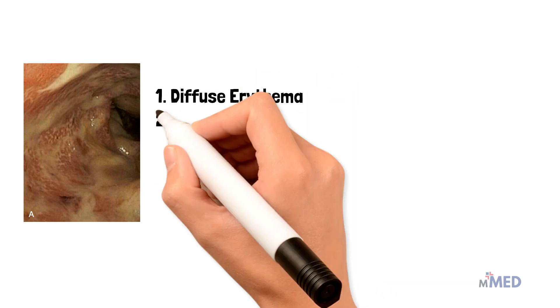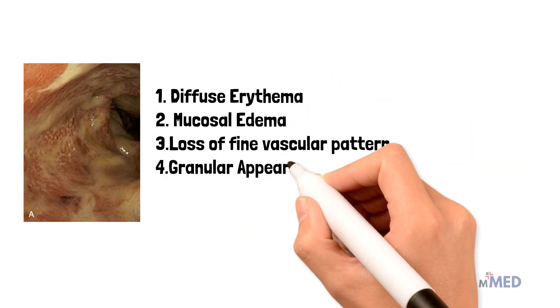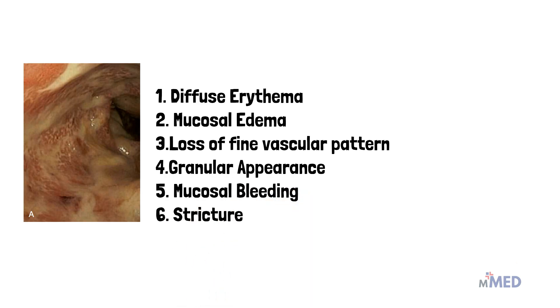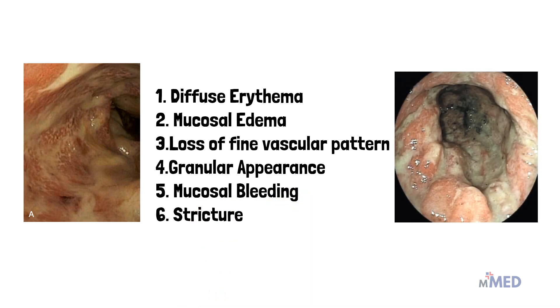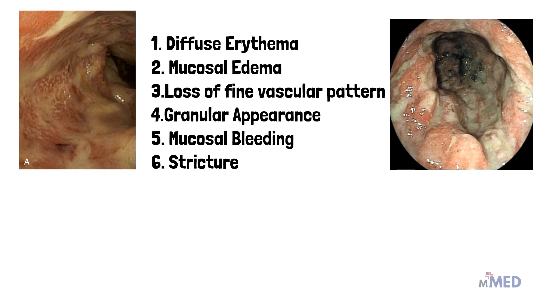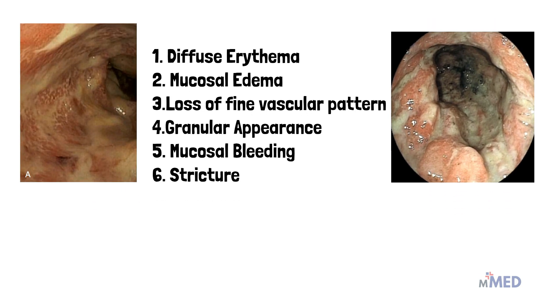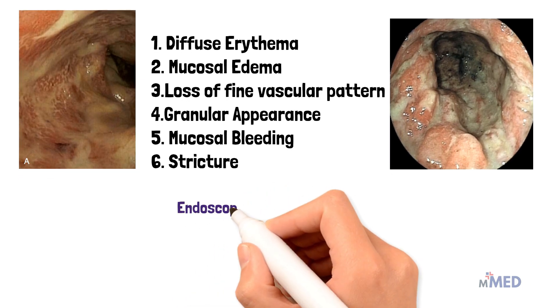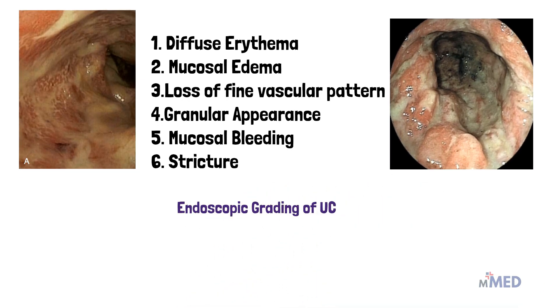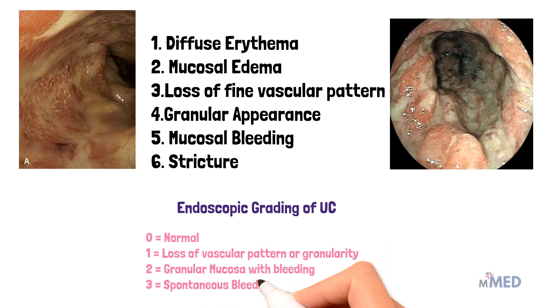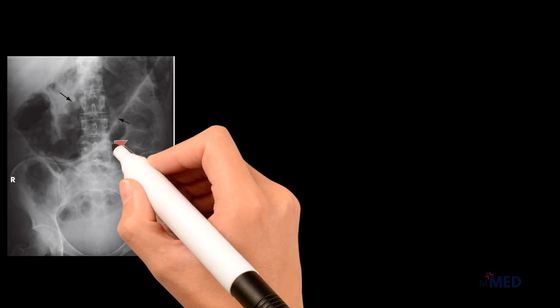On endoscopy we can see diffuse erythema, mucosal edema, loss of fine vascular patterns, granular appearance with mucosal bleeding, and strictures — though strictures are more common in Crohn's disease. There is a standard endoscopic grading of ulcerative colitis from 0 to 4, with 0 being normal and 4 being the most severe, representing ulceration.